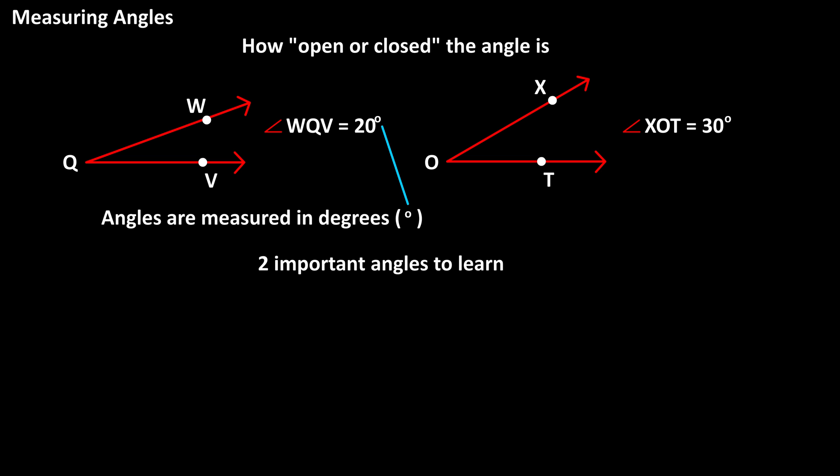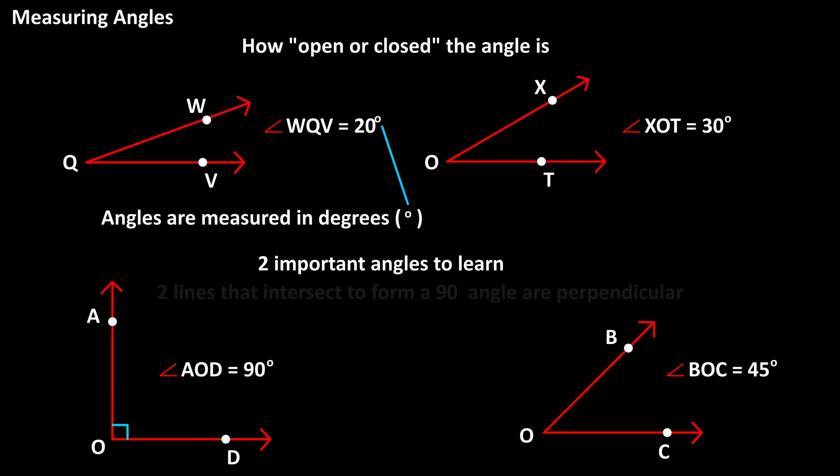There are two very important angles to learn as references: a 90 degree angle and a 45 degree angle. The 90 degree angle, which is shown here, is called a right angle, and it is typically marked with a little box, as you see here in angle AOD. The two lines that intersect to form a 90 degree angle are said to be perpendicular.